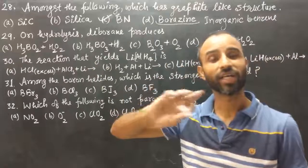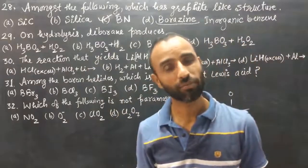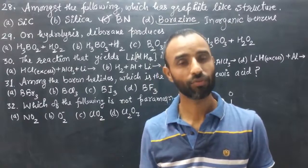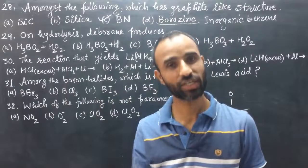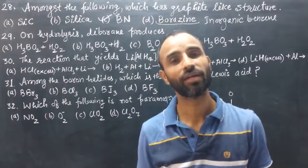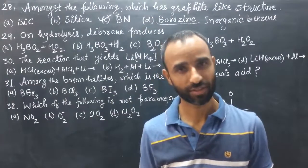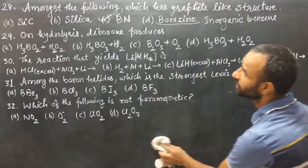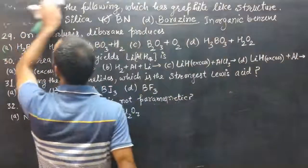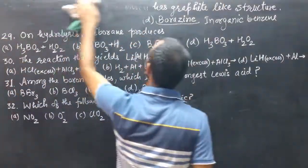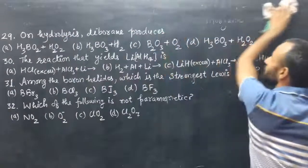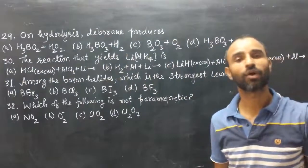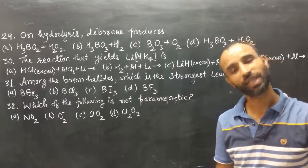Silicon carbide has two forms, alpha and beta, just like ZnS. The alpha form is like wurtzite and the beta form is like zinc blende (diamond cubic). So silicon carbide is not graphite-like. Question 28 answer is boron nitride. Questions 29–32 are from CSIR-SET 2017, and questions 33–34 are from CSIR-SET 2018.